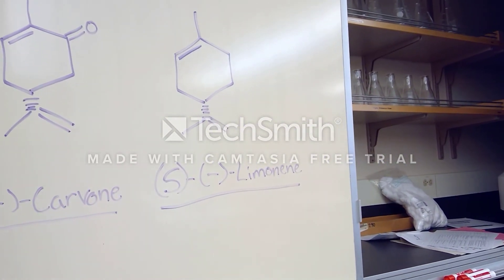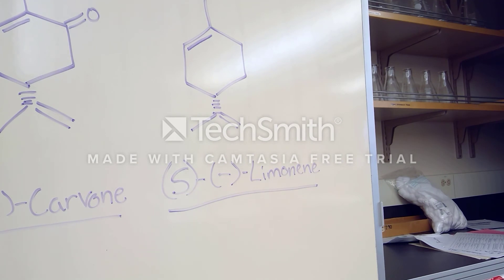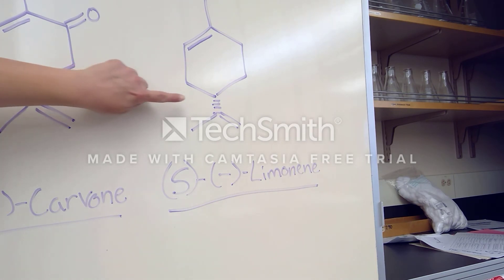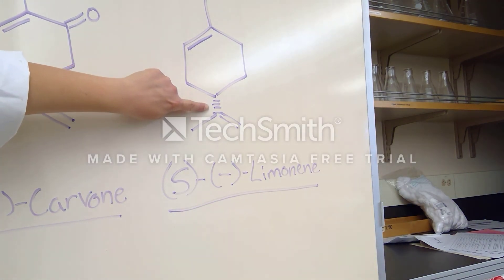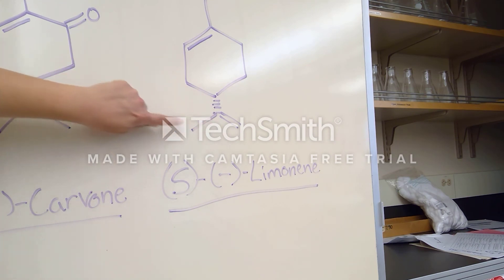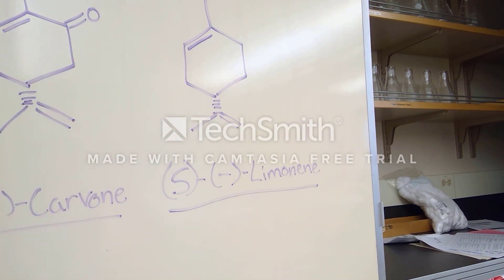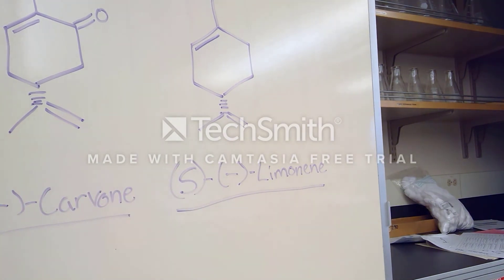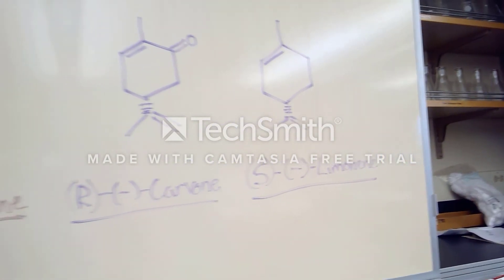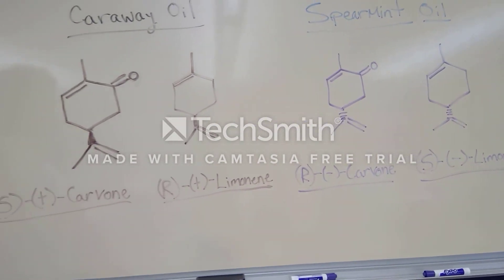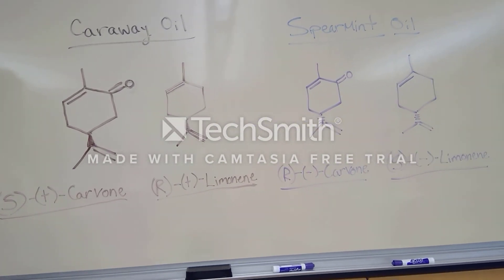Lastly, we have S(-)-limonene. S(-)-limonene is again an alkene, and we have the S configuration at the chiral carbon. The dash symbol indicates that this group below is going backwards, and the direction of optical rotation is in the negative direction. So these are the compounds we will be separating in these two separate oils.